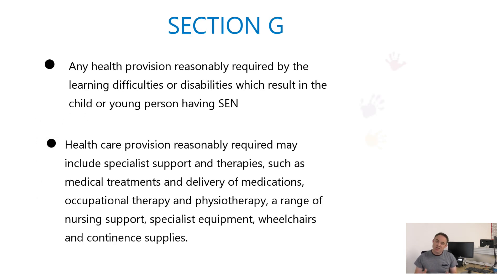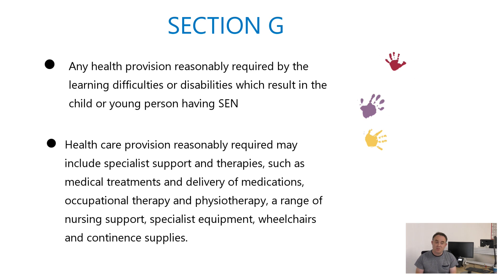Section G of the plan deals with health provision recommended for inclusion, and it's essentially for the CCG to determine what that provision might be. In my experience it typically involves things like medical treatments, the administration of medication, some therapies that don't educate or train the child, perhaps psychological input through CAMHS, nursing support, and specialist equipment like wheelchairs. If you have doubt about where a provision has been placed, ask why it's in section F or section G, so you can understand the rationale and if necessary challenge it.